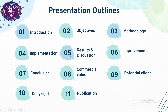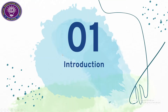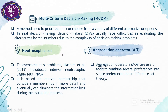This is our presentation outline. Multicriteria decision making is a method used to prioritize, rank, or choose from a variety of different alternatives or options. In real decision making, decision makers usually face difficulties in evaluating the alternatives by real numbers due to the complexity of decision making problems.